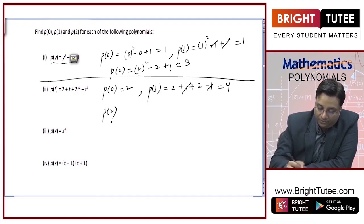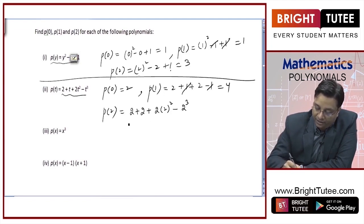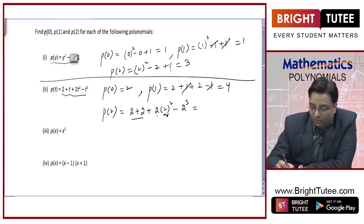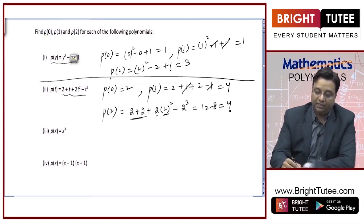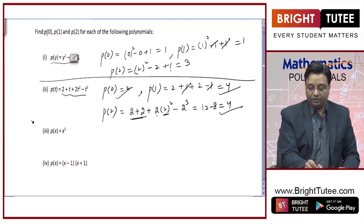p of 2 is equal to 2 plus 2 plus 2 into 2 squared minus 2 cubed. 2 squared is 4 into 2 is 8, plus 4 is 12, minus 8 is 4. So p of 0 is 2, p of 1 is 4, p of 2 is also 4.